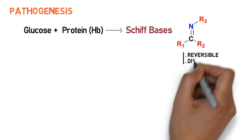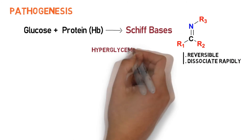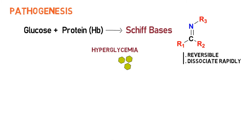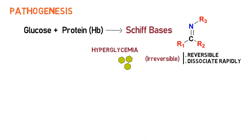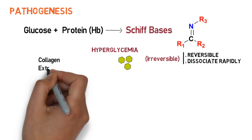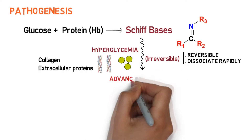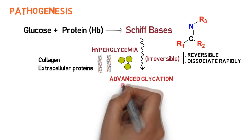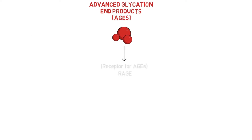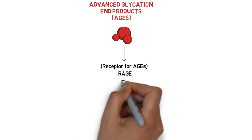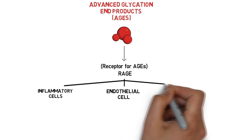This reaction is reversible and can dissociate rapidly, but with recurrent or persistent hyperglycemia, glucose attachment becomes irreversible and binds not only to hemoglobin of red cells, but also to collagen or extracellular proteins of the interstitial tissue — forming advanced glycation end products (AGEs). AGEs can bind to their specific receptor known as RAGE, which is expressed on inflammatory cells, endothelial cells, and vascular smooth muscle cells.